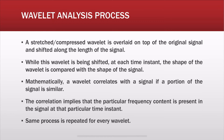the shape of the wavelet is compared with the shape of the signal. Mathematically, a wavelet correlates with a signal if a portion of the signal is similar. This correlation implies that a particular frequency is present in the signal at that particular time instant. It's really important to know what frequency is present at what time to get good results, and that's where wavelet analysis succeeds.